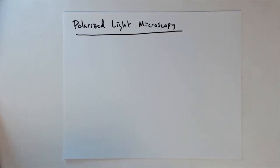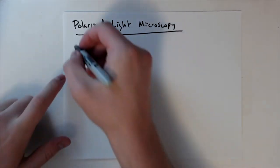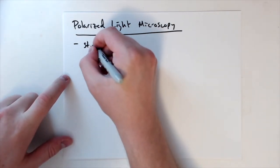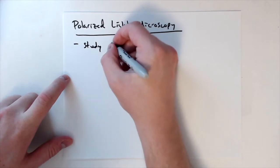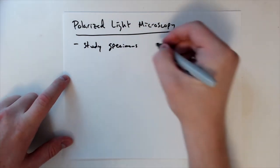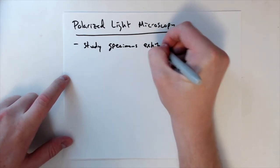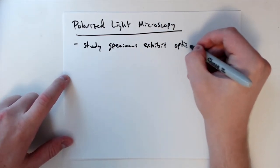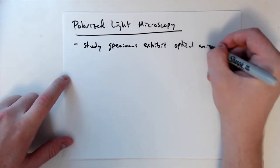This module is going to talk about polarized light microscopy. This is another subset of light microscopy, and we use it to study specimens — a particular subset of specimens that exhibit what we call optical anisotropy.